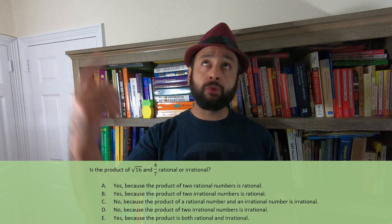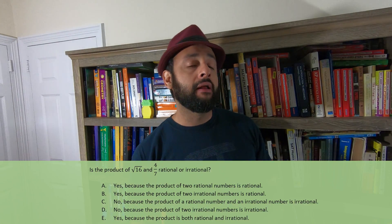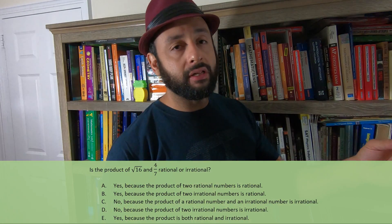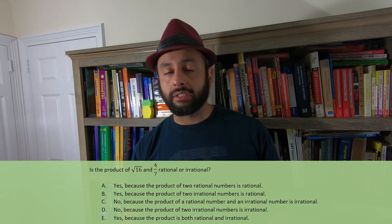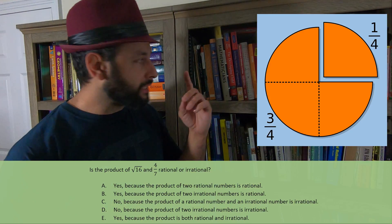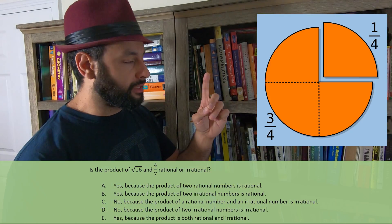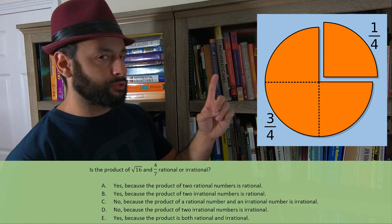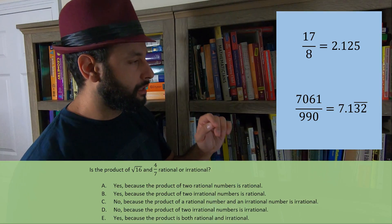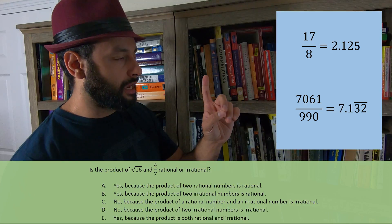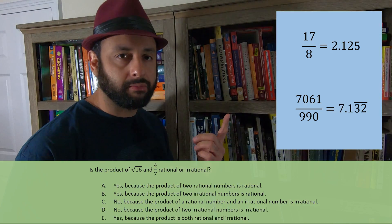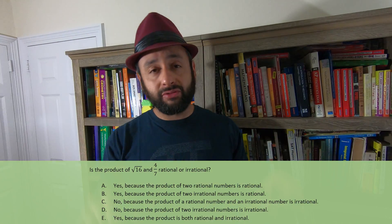What do you think the answer is? Don't be afraid to be wrong — being wrong right now is the first step to being right for the rest of your life. There are two definitions of rational numbers: one, a rational number is a number that can be written as a ratio of two integers; two, a rational number is a number that can be written as a terminating or repeating decimal.